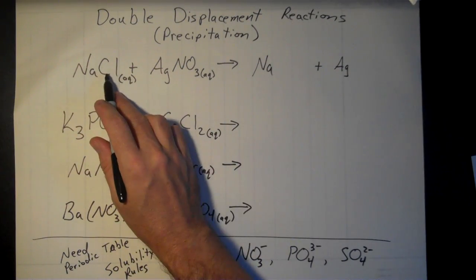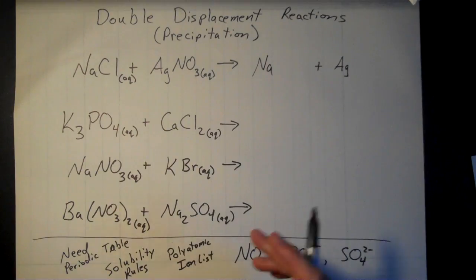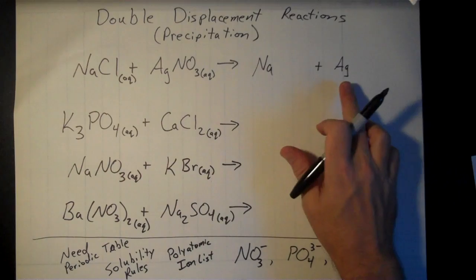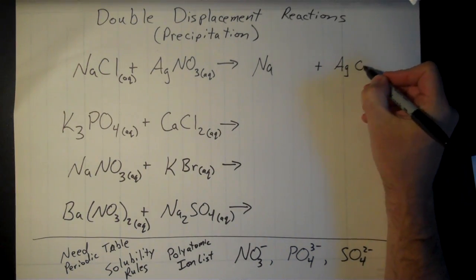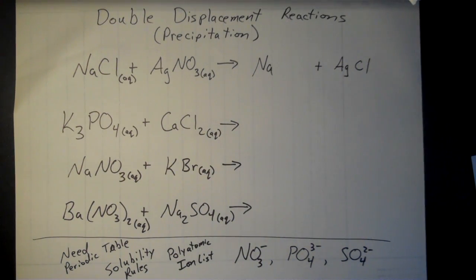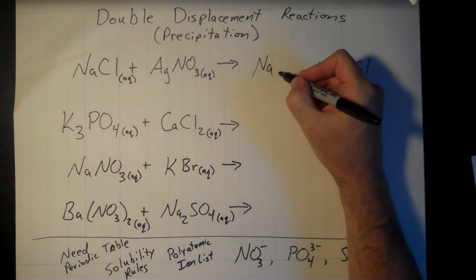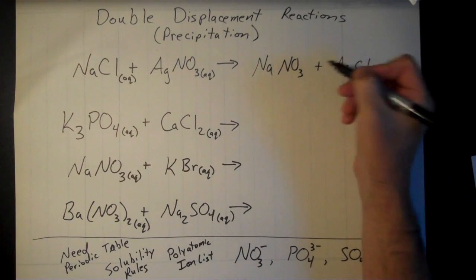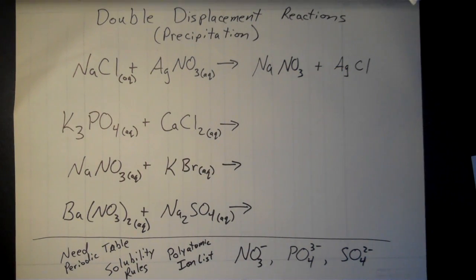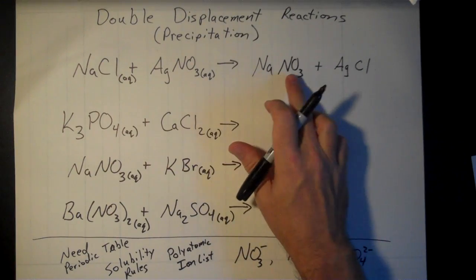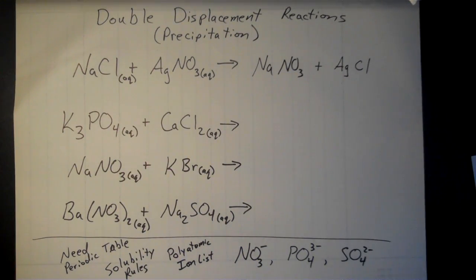I have sodium and silver, and I'm going to bring the chlorine and nitrate over — but switch which cation they're with. The chloride was with sodium on the reactant side, so on the product side I'll put that chloride with the silver. The nitrate was with silver, so it goes with sodium on the product side. A lot of people forget the next step: you need to balance the positive and negative charges for each product substance.